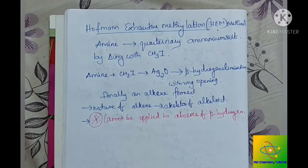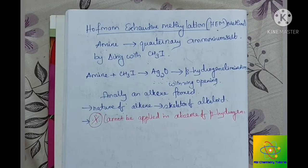The main very important factor in this Hofmann exhaustive methylation is that it cannot be applied if that particular alkaloid does not contain beta hydrogen, that is with respect to the nitrogen atom present in the amine.